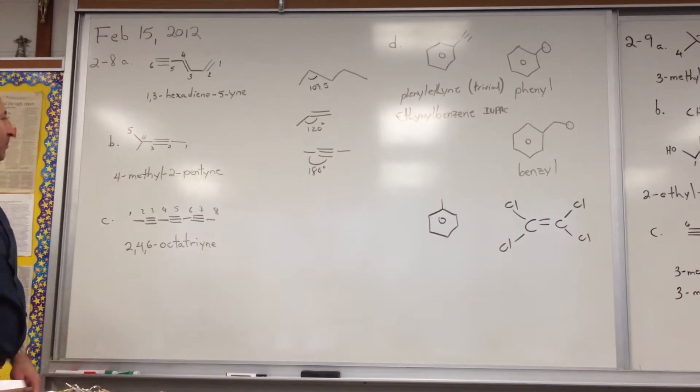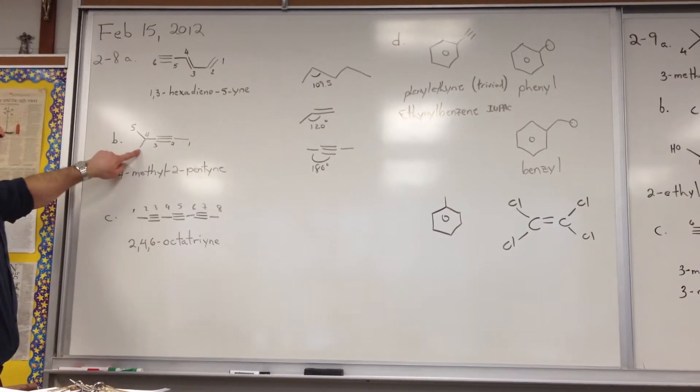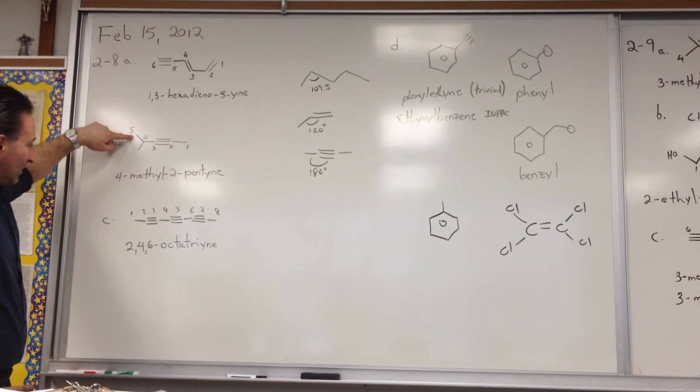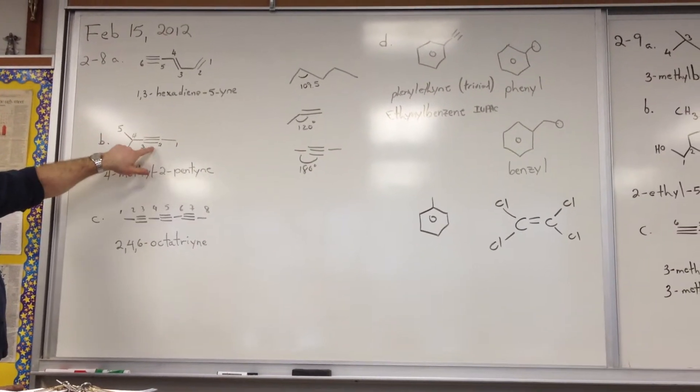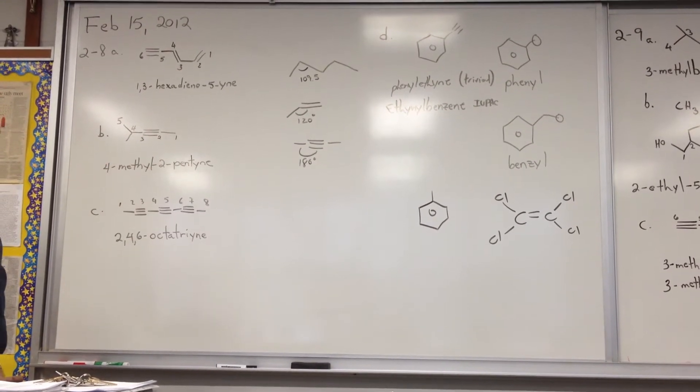Example B, there's a triple bond at the second position, there's a methyl group at the fourth. I was tempted to start numbering it from this side, but you have to start, the higher priority is the alkyne, so you have to number it from the side that's going to give the alkyne priority.